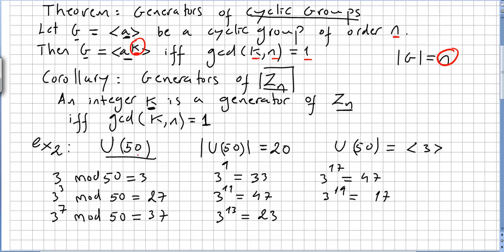The list of generators of U50. U50 is generated by 3 to powers of K, so K can be 1, 3, 7, 9, 11, 13, 17, and 19. All these numbers, the greatest common divisor between these numbers and 20 is 1, like in the theorem. So this is the list of all generators of U50.